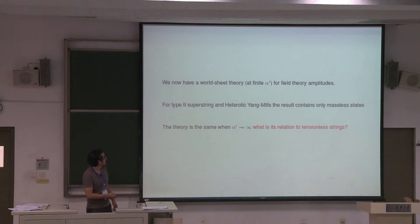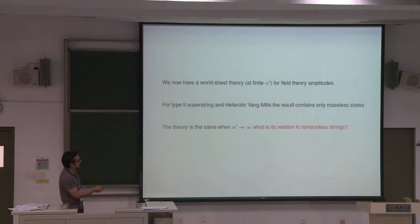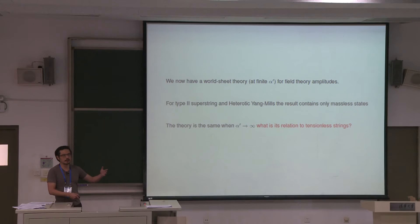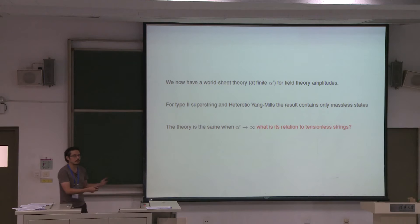For the type 2 superstring and heterotic Yang-Mills, doing this gives only the massless states — no massive states. That means this formulation has alpha prime in it but its value is irrelevant, because the final physics doesn't depend on any scale. It's completely massless. So you can take alpha prime to infinity, meaning this should be equivalent to some tensionless string. Indeed, this is equivalent to the tensionless string.